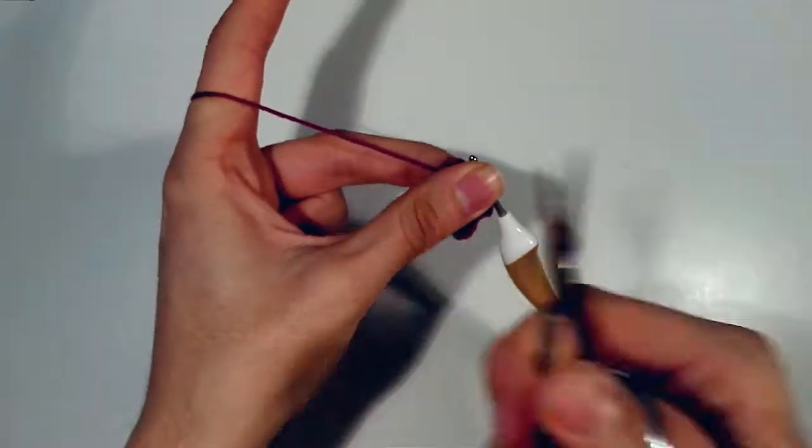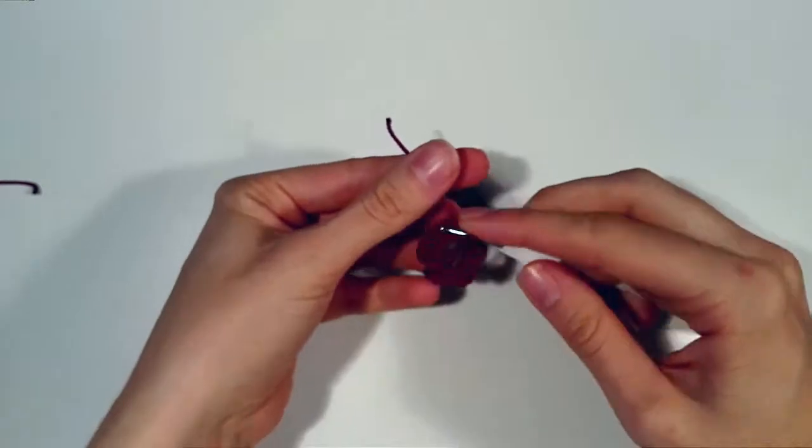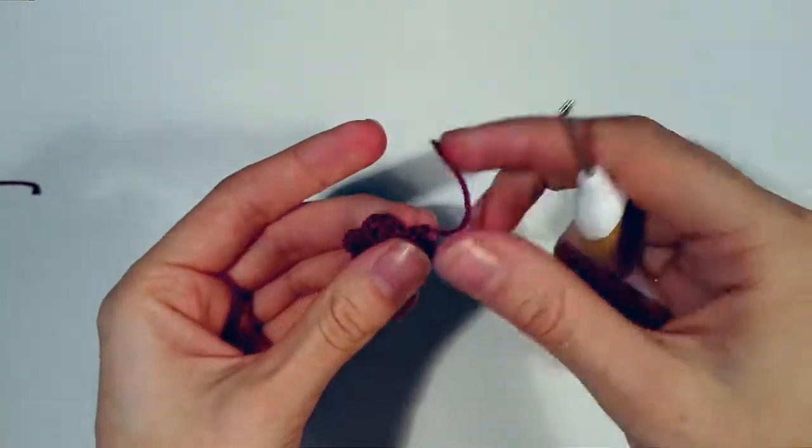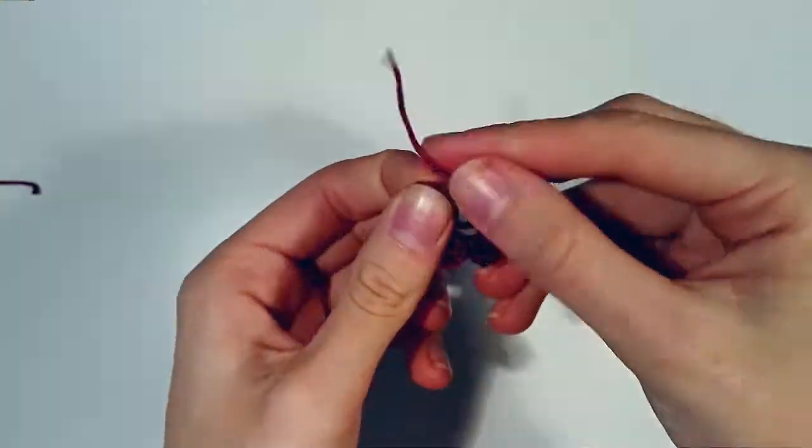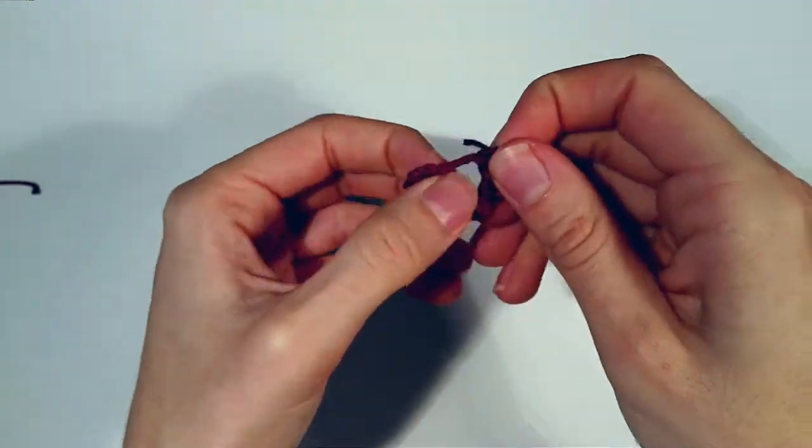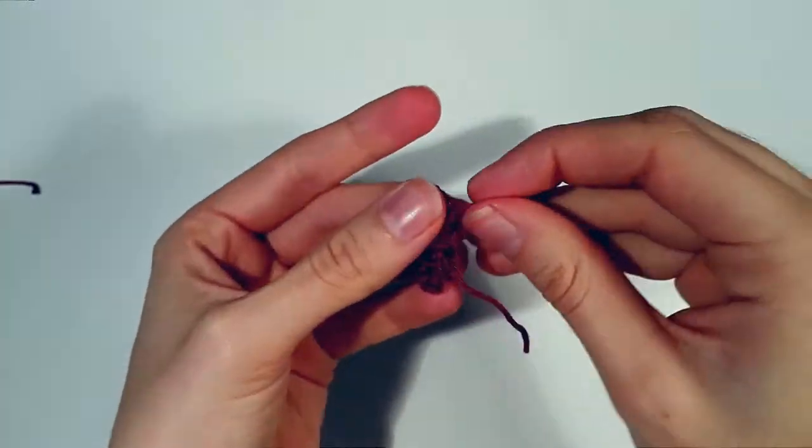So we're going to cut our yarn and end it here. So what we have now is we have our five petals in our magic ring. So now we're going to close the magic ring.